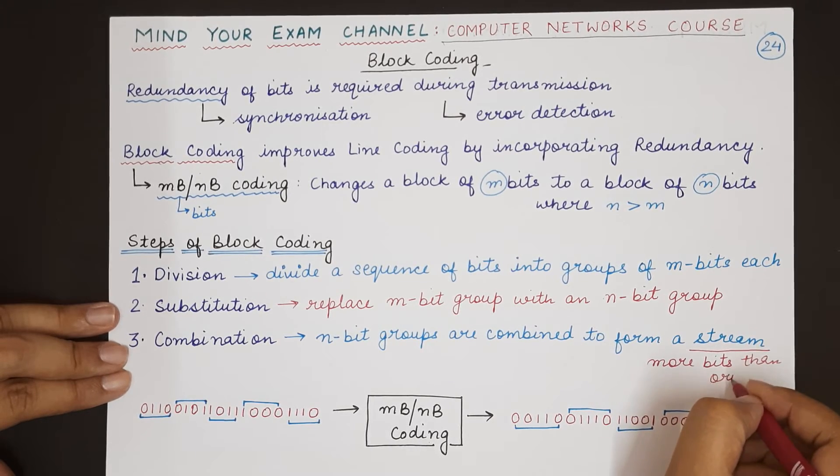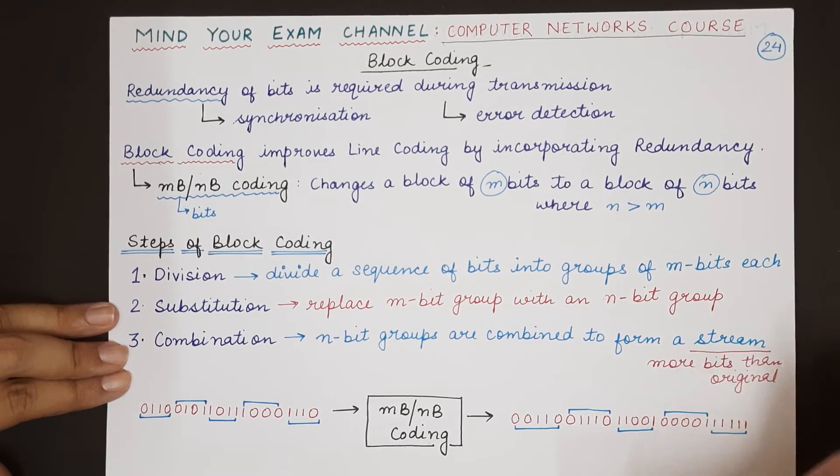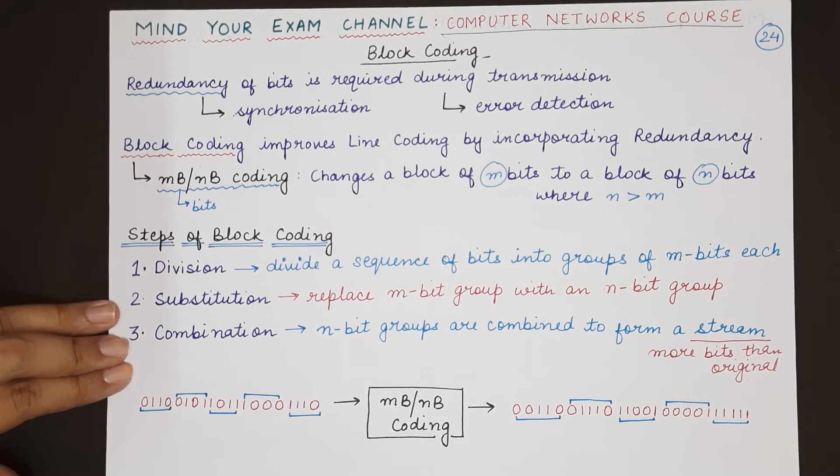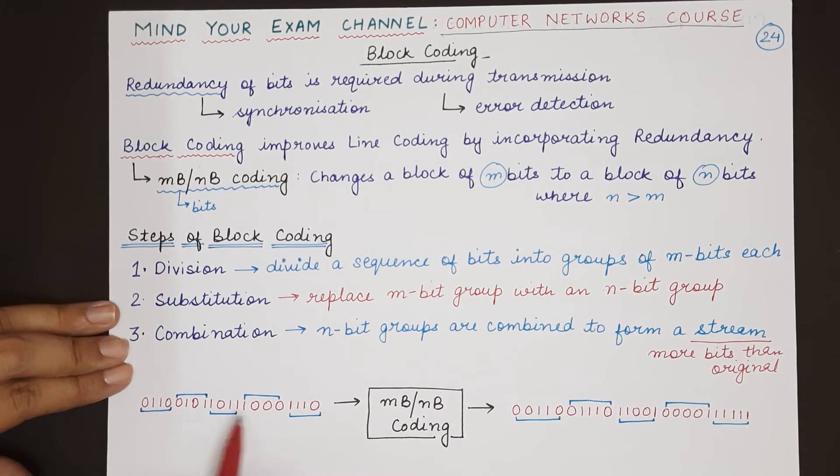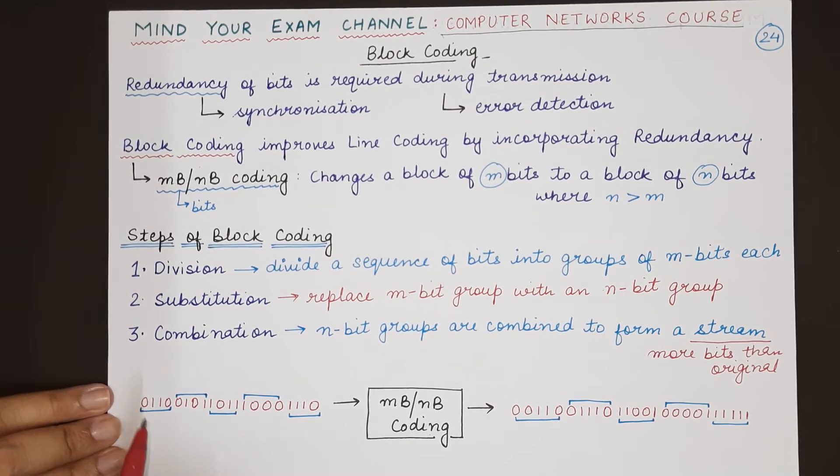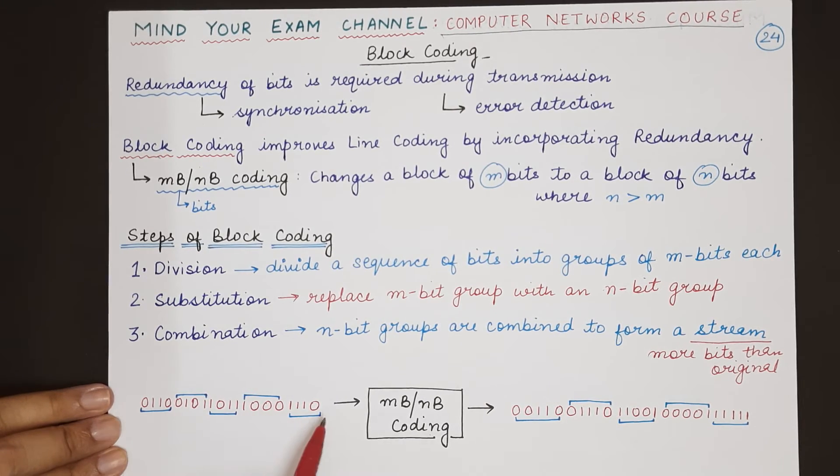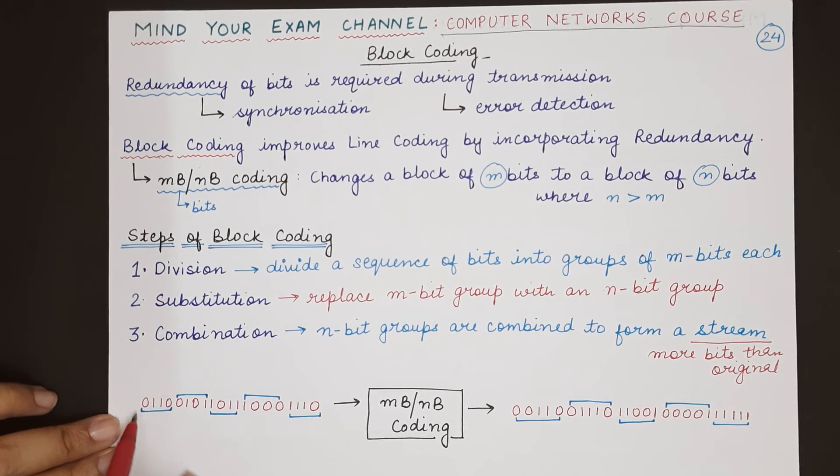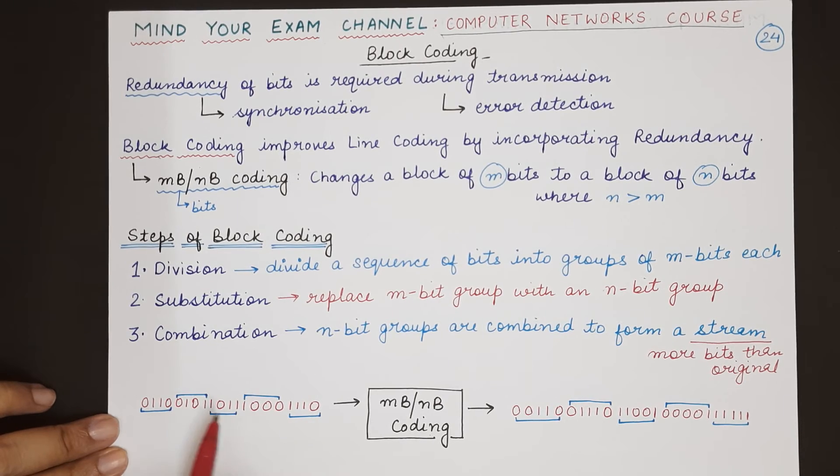Here is a diagrammatic representation of how block coding actually works. If this was the original bit stream that the sender was sending, it consisted of some bits—zeros and ones. If we are dividing these bits, this sequence of data into groups of four, then in the division step each group will be separated, and then each group will be substituted or replaced with a group of five bits, as we have done here.